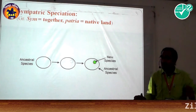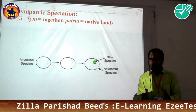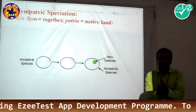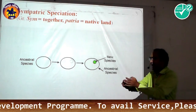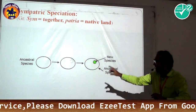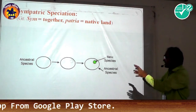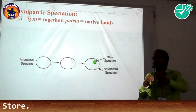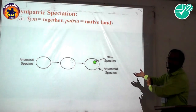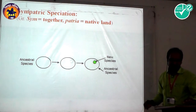Next is sympatric speciation. 'Sym' means together and 'patria' means native land. In the same native land, or in the same area, if a population is divided into two groups, there is the formation of a new species. In the diagram, the first circle represents the ancestral species and its geographical area. The second diagram shows formation of a new species indicated by a dotted line, and the third circle shows the green new species formed in the same native land — this is called sympatric speciation.